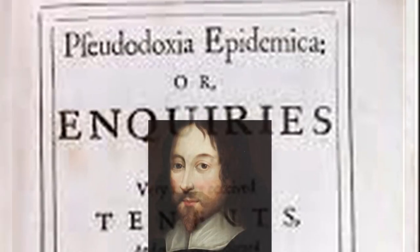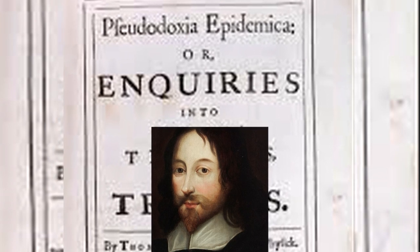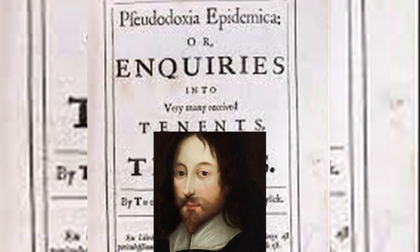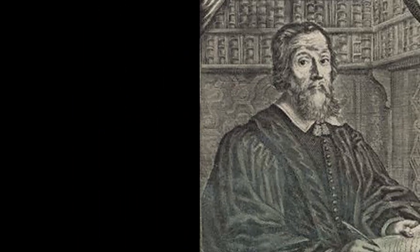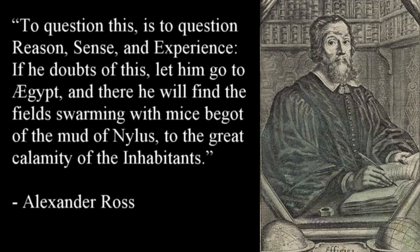In 1646, Thomas Brown published Pseudoxia Epidemica, an attack on what he called false beliefs and vulgar errors, including spontaneous generation. It was quickly rebuffed by his contemporary, Alexander Ross: 'To question this is to question reason, sense, and experience. If he doubts of this, let him go to Egypt, and there he will find the fields swarming with mice begot of the mud of Nilus, to the great calamity of the inhabitants.'